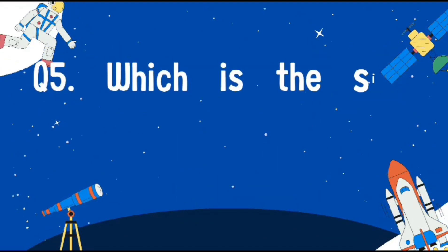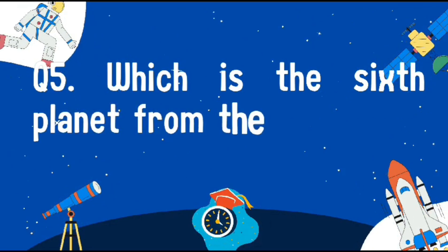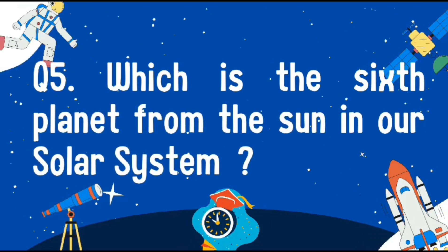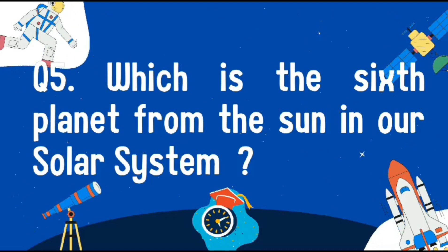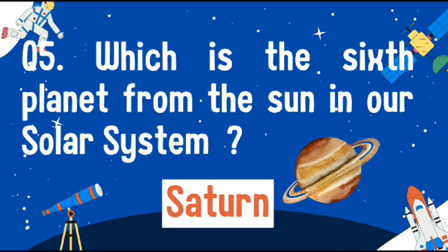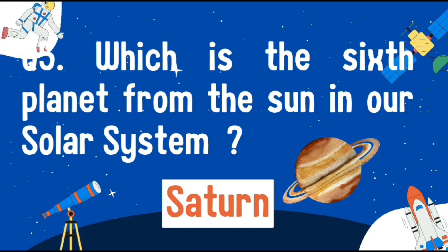Which is the sixth planet from the sun in our solar system? The sixth planet from the sun in our solar system is Saturn.